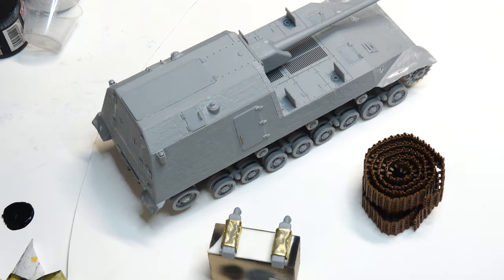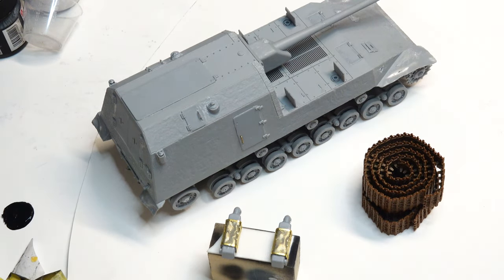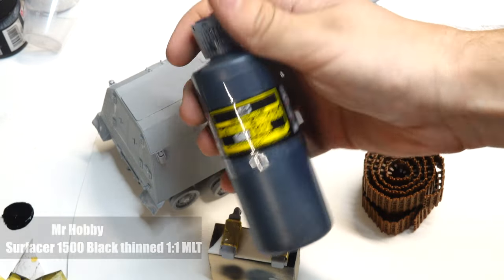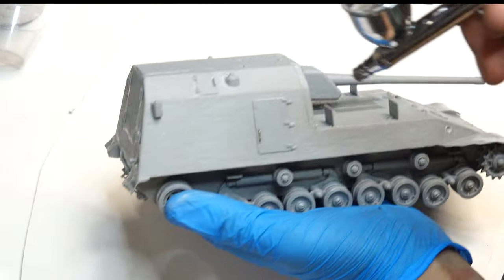Now, after all that work, I get to painting. For priming the surface, I'm using a lacquer primer, Mr. Surfacer 1500. I have a pre-mixed bottle here with Mr. Leveling Thinner, ready to go.